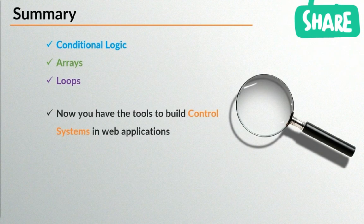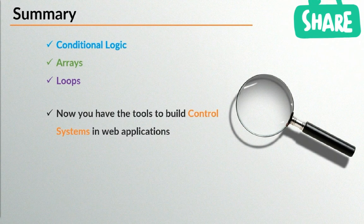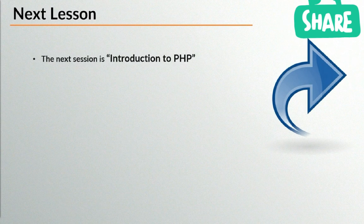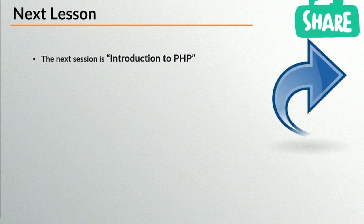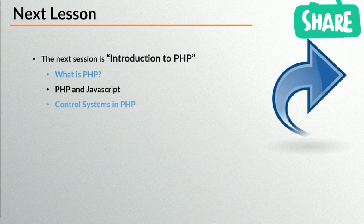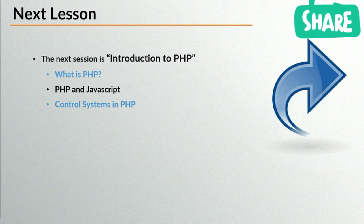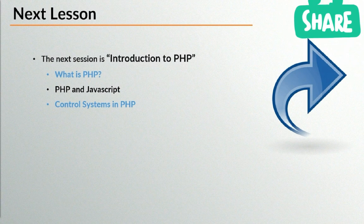A quick summary: we covered conditional logic, arrays, and loops. We now have the tools to build what's known as a control system — like the brain of a program. Our next lesson introduces PHP, a super important lesson covering the back end for the first time. We'll be covering what PHP is and updating our knowledge in terms of data types and control systems in PHP, looking at syntax differences and similarities with JavaScript. At the end of the day, variables store information, if loops and while loops all exist — they're just constructed slightly differently.